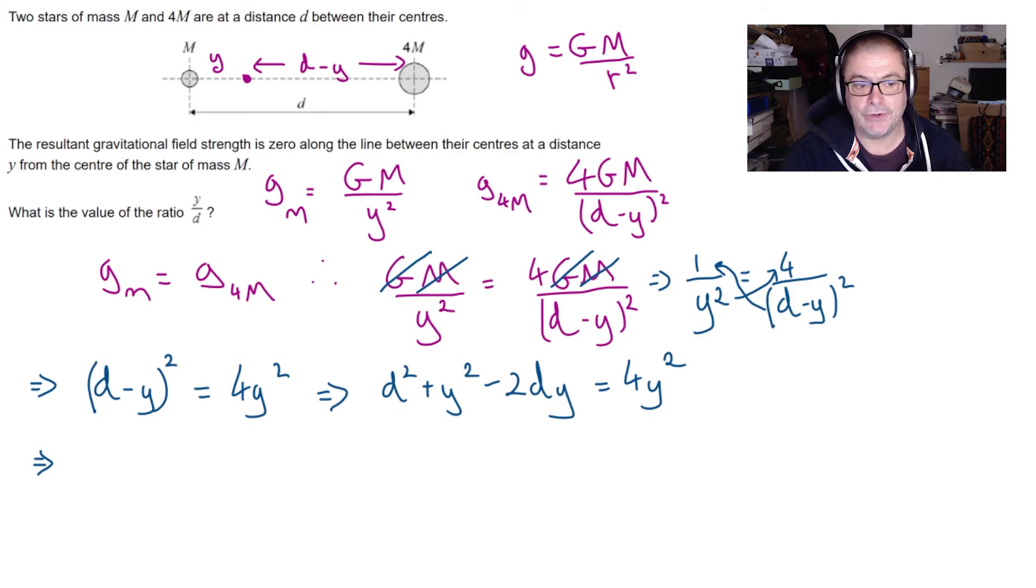Much better route though is to notice that you've got a square on each side and therefore to take the square root of each side. If you do that you get simply d minus y equals 2 y. Ah now that's looking much simpler.